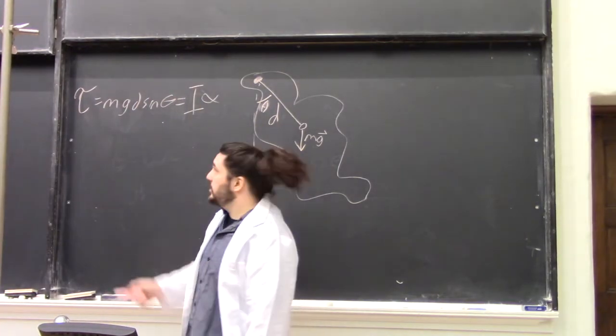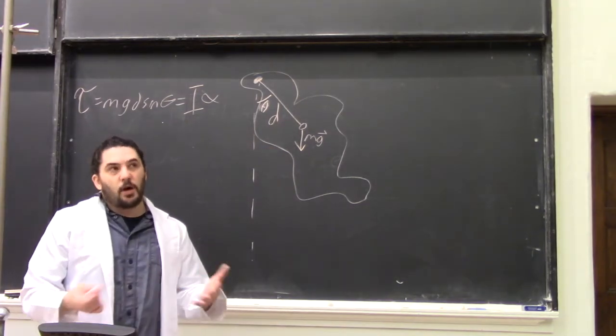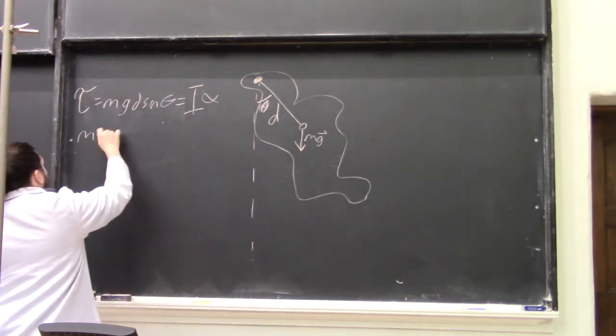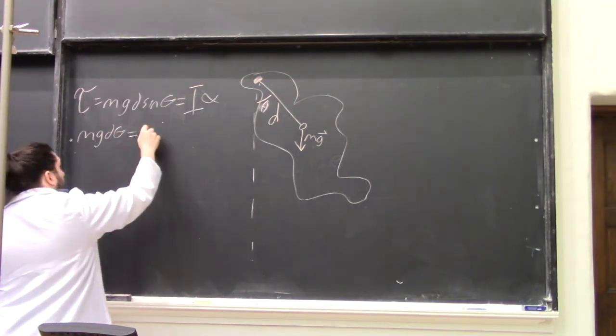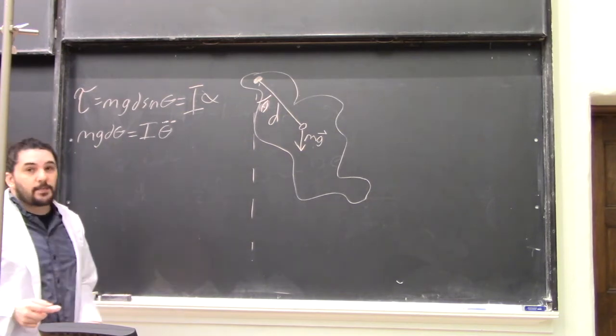And from angular motion, torque equals I alpha. So in the small angle approximation that we always use for pendula, MGD theta equals I theta double dot.